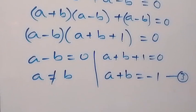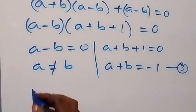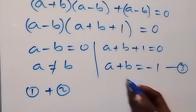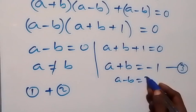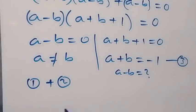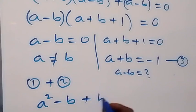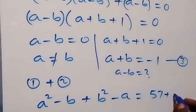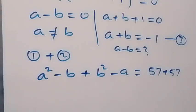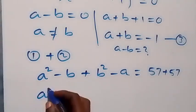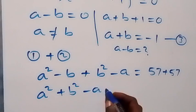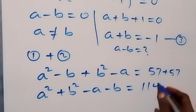In the next step, let's add equation 1 and equation 2. We are interested in finding a minus b so we can solve simultaneously. Adding the left-hand sides: equation 1 gives a squared minus b, plus equation 2 gives b squared minus a, which equals 57 plus 57. Rearranging, bringing the squares together: a squared plus b squared, then we have minus a minus b, equals 114.